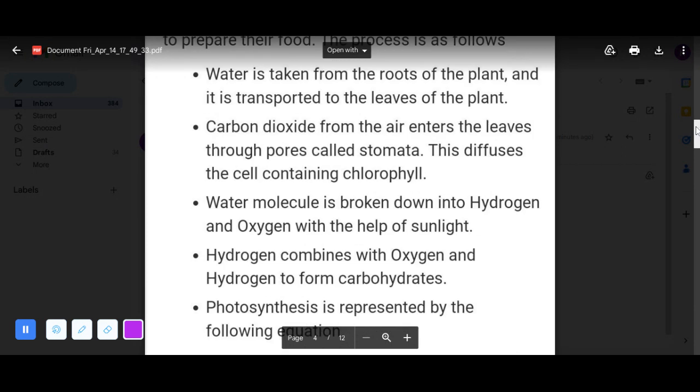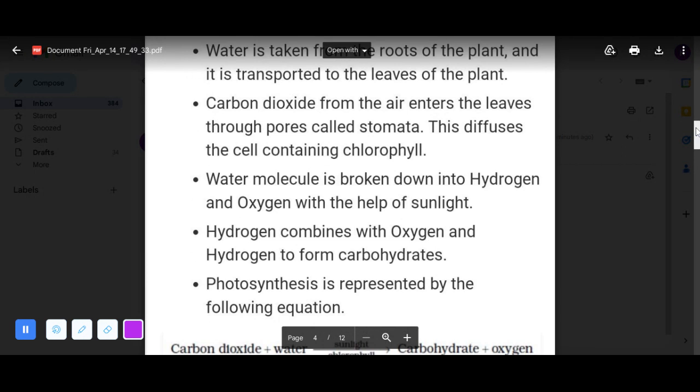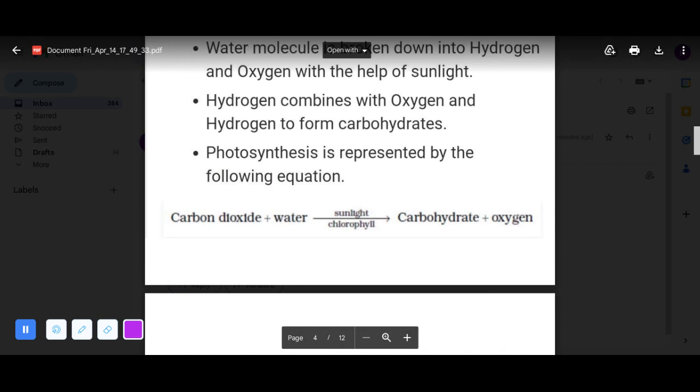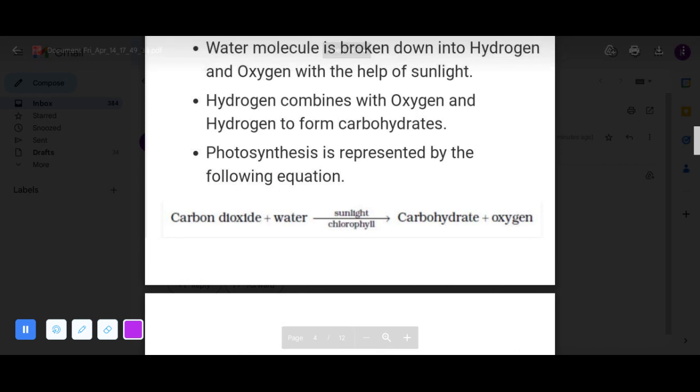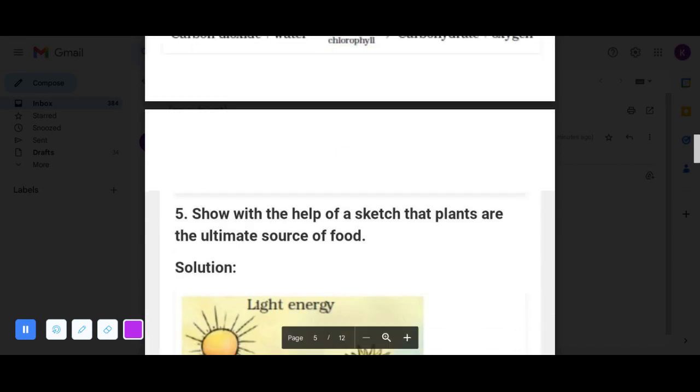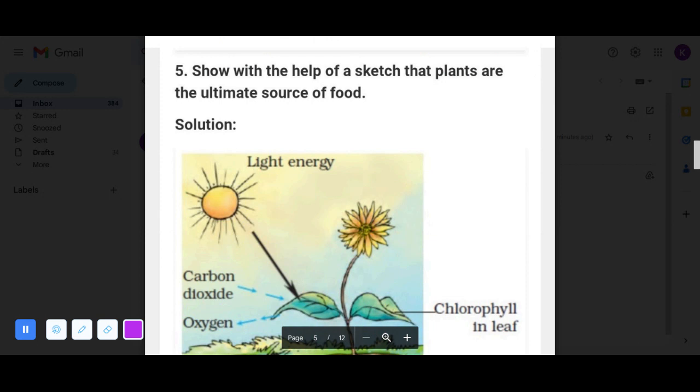Hydrogen combines with oxygen and hydrogen to form carbohydrates. Photosynthesis is represented by the following equation: carbon dioxide plus water, in sunlight by chlorophyll, is equal to carbohydrate plus oxygen. Now next question, show with the help of a sketch that plants are the ultimate source of food or energy.